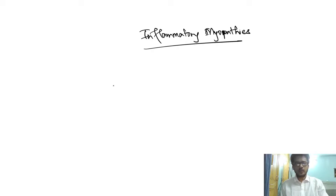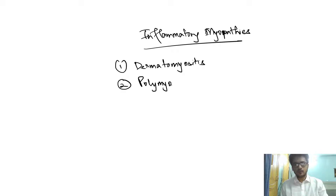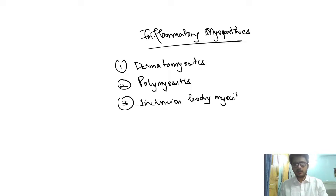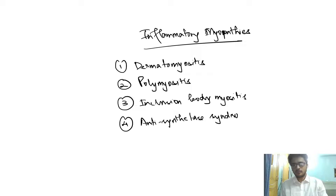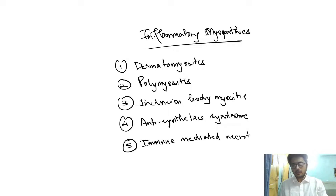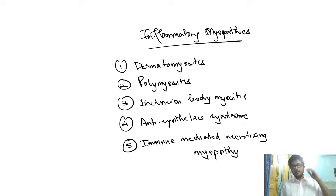The five important inflammatory myopathies you need to know are: number one, dermatomyositis; number two, polymyositis; number three, inclusion body myositis; number four, antisynthetase syndrome; and number five, immune-mediated necrotizing myopathy.